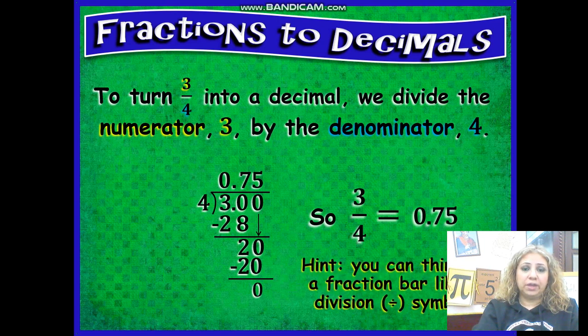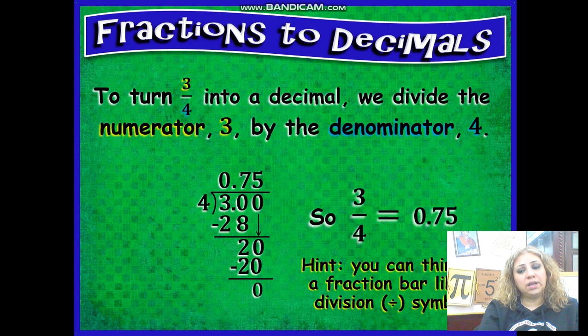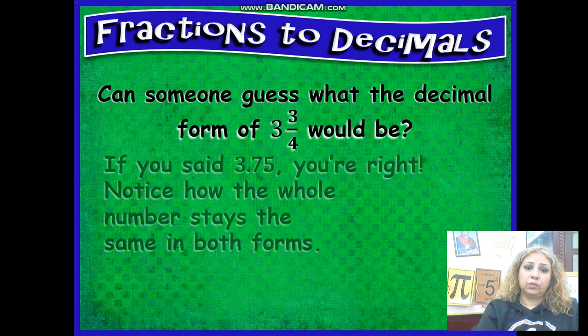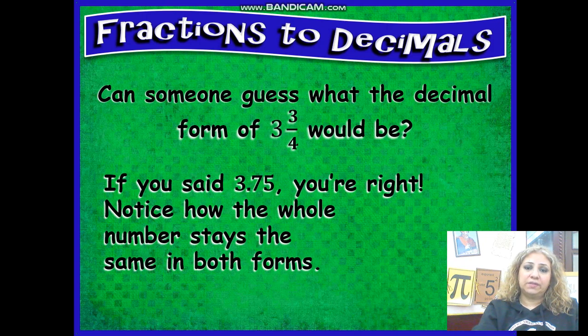So you can think of the fraction bar as a division symbol. So remember whenever you have a fraction and you want to convert it to a decimal, just divide the numerator by the denominator this way. Can someone guess what the decimal form of three and three fourths would be? If you said 3.75 you are right. Notice how the whole number stays the same in both forms.